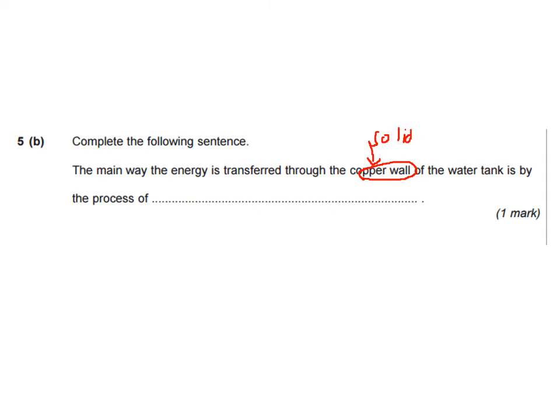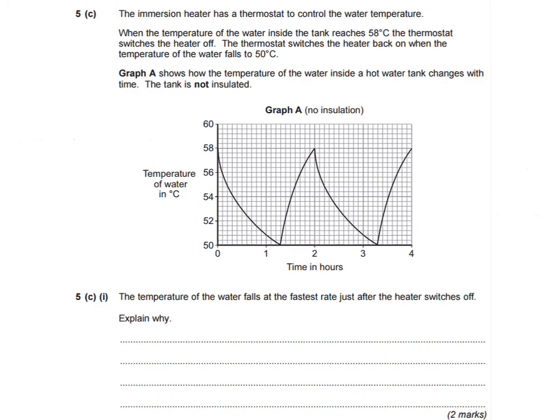Part 5b is fairly straightforward: complete the sentence — the main way energy is transferred through the copper wall of the water tank is by the process of [blank]. The copper wall is a solid, so think about the main heat transfer process that occurs in solids and write that in.